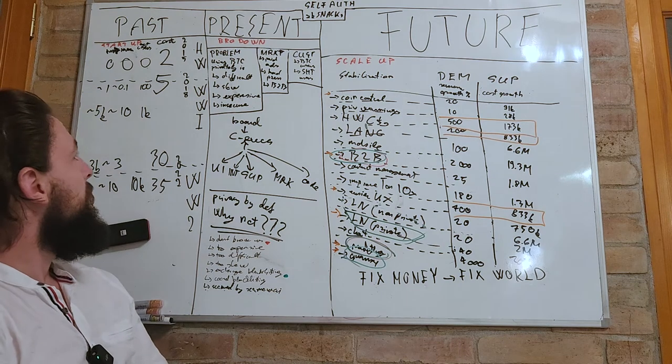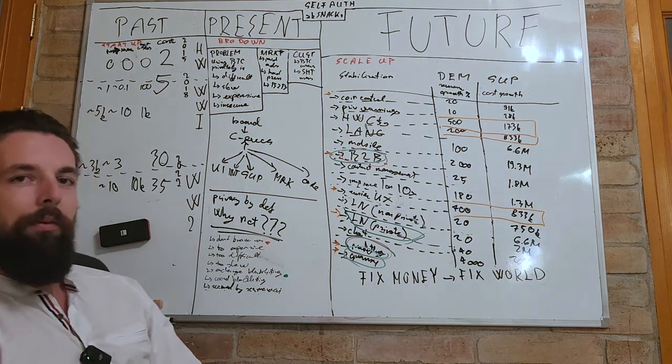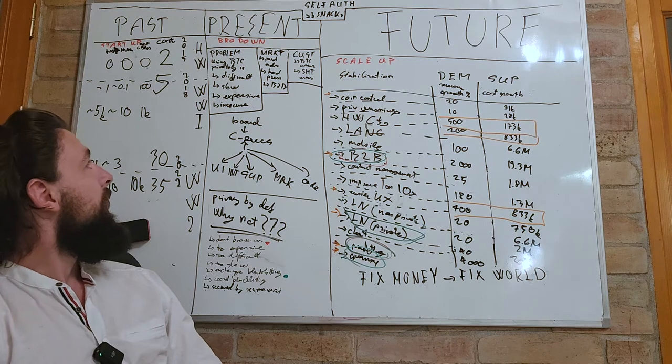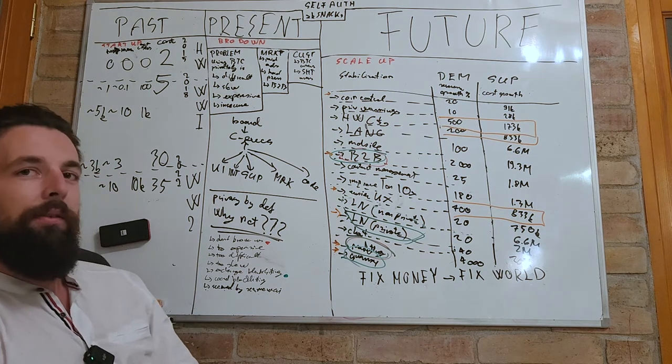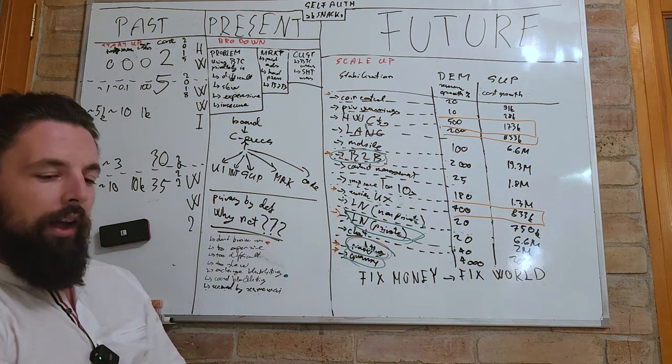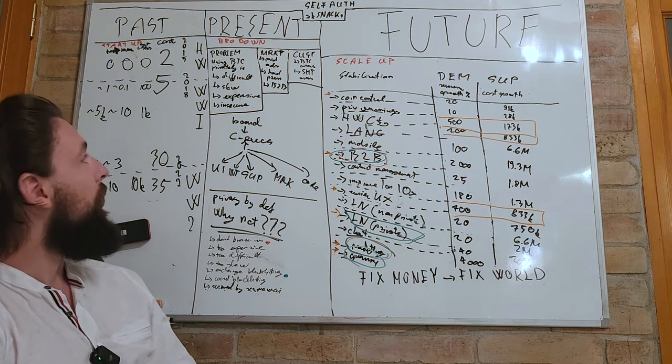The problem that we have always been faced is that using Bitcoin privately is difficult, slow, expensive and insecure. And it has to get better on all of these fronts.